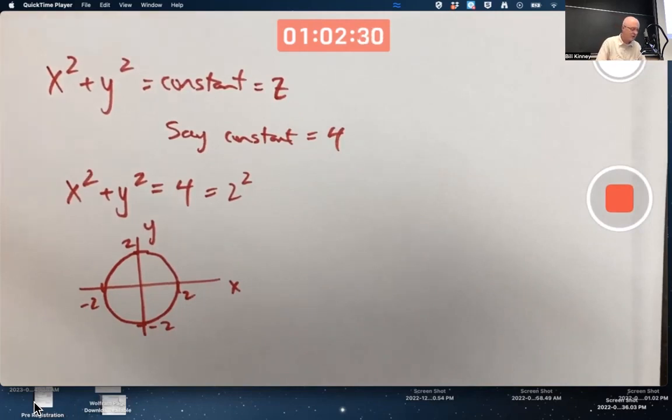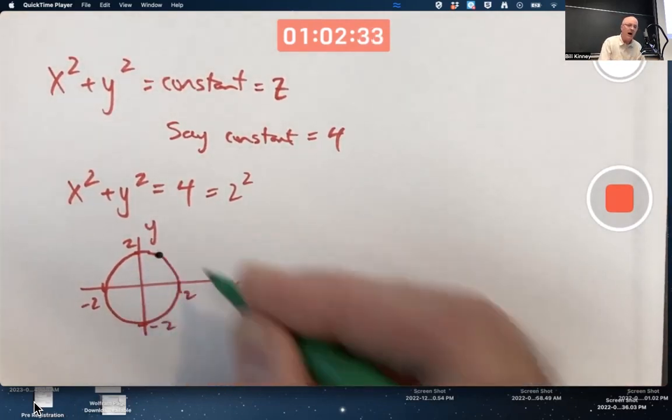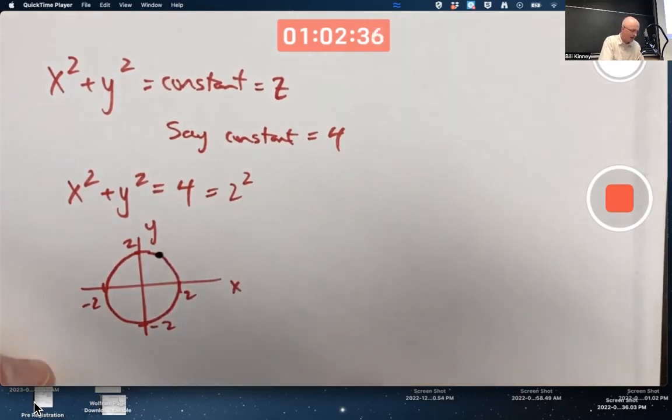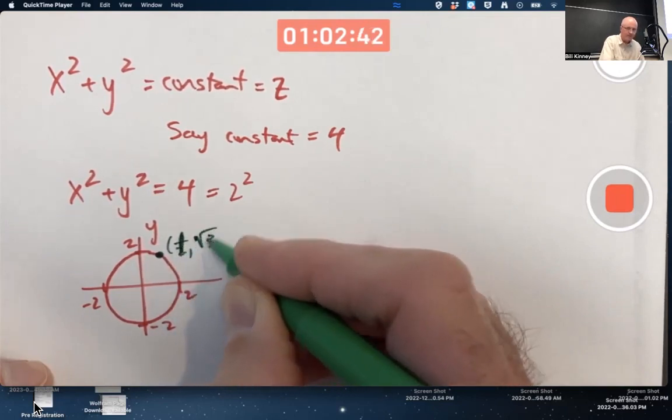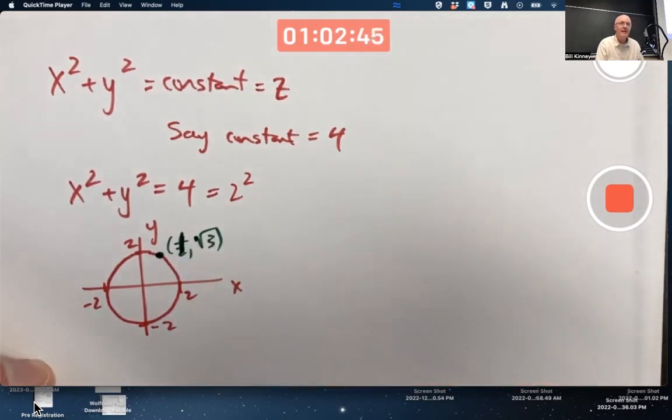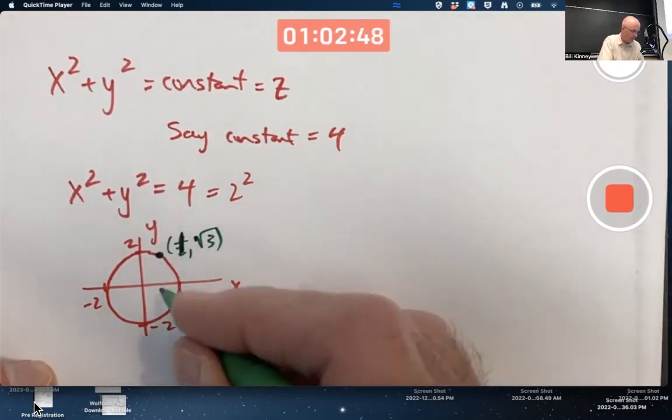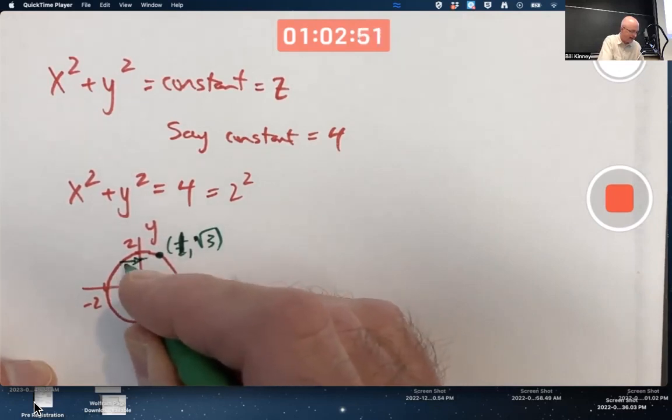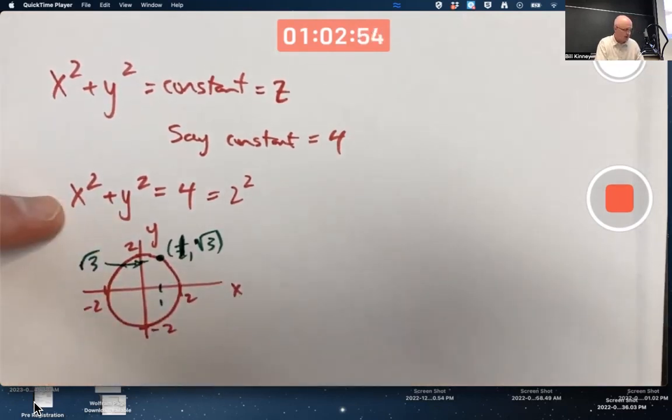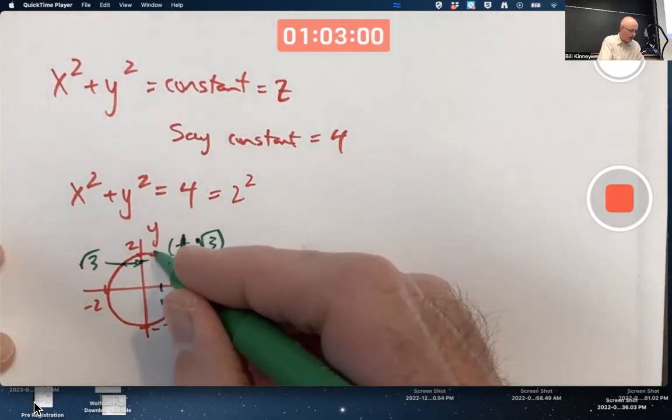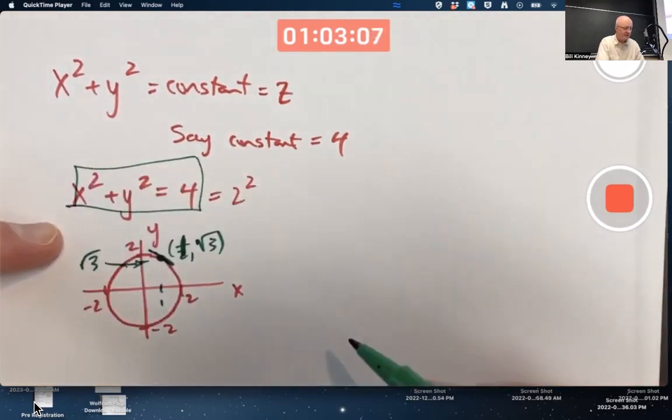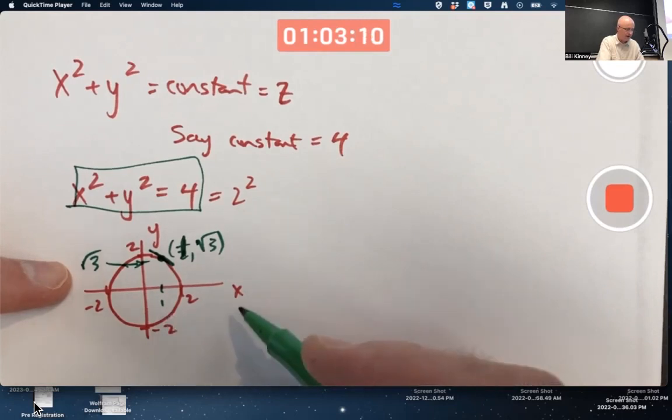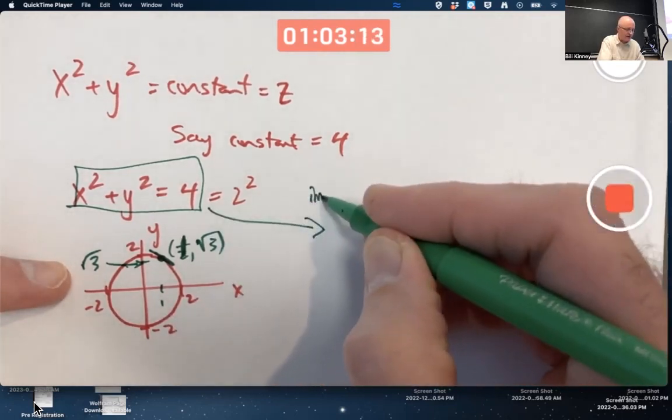Implicit differentiation helps us understand this curve. Let's do one example in two minutes understanding this curve. For example, I might like to know at the point, let's make this point be one, square root of three. That is a point on this curve because it satisfies this equation. One squared is one. Square root of three squared is three. One plus three is four. I might want to know what is the slope of that curve there? One way to do it would be to take this equation and solve for y as a function of x and find the derivative and plug in x equals one. Another way to do it is with something called implicit differentiation.